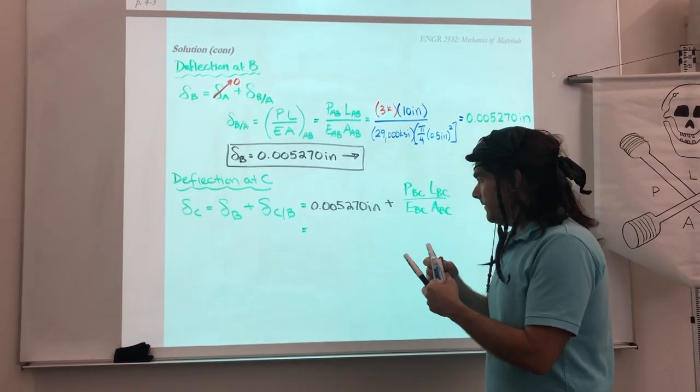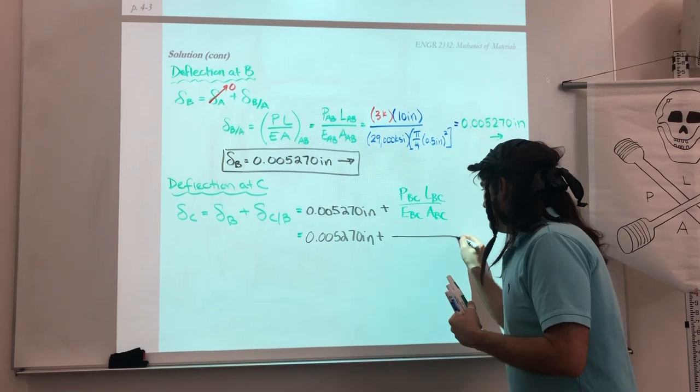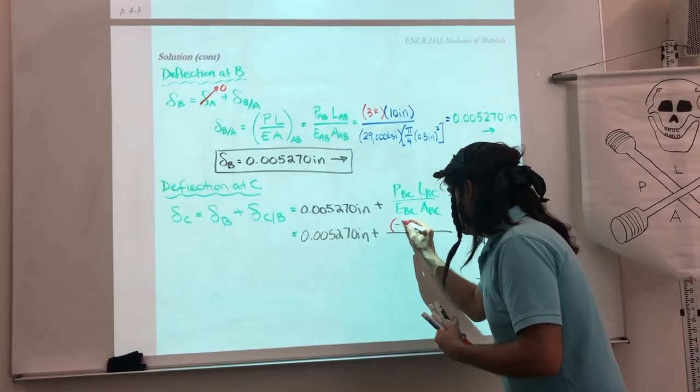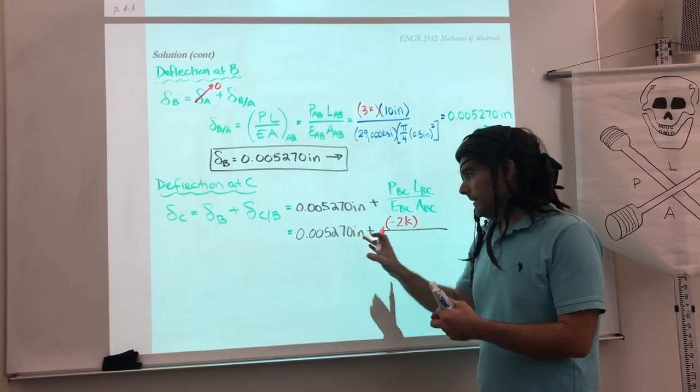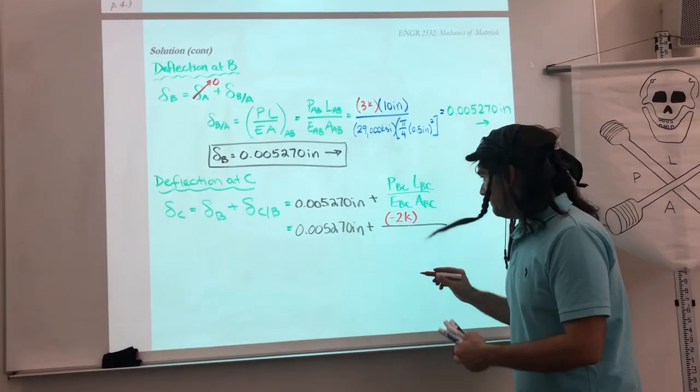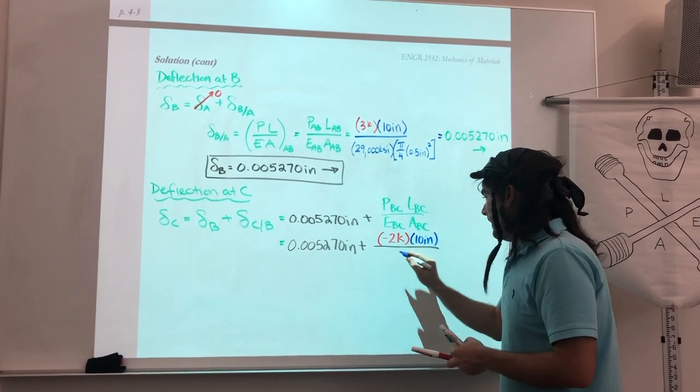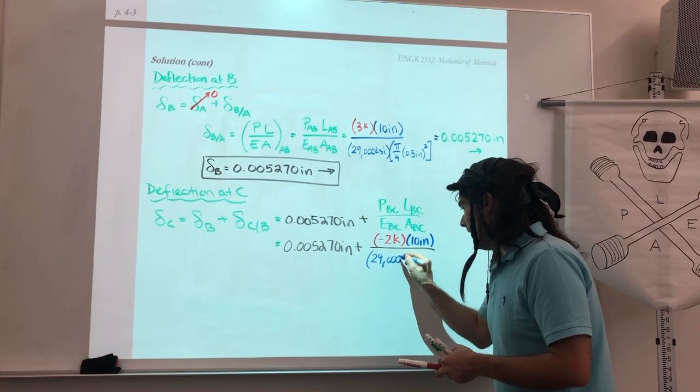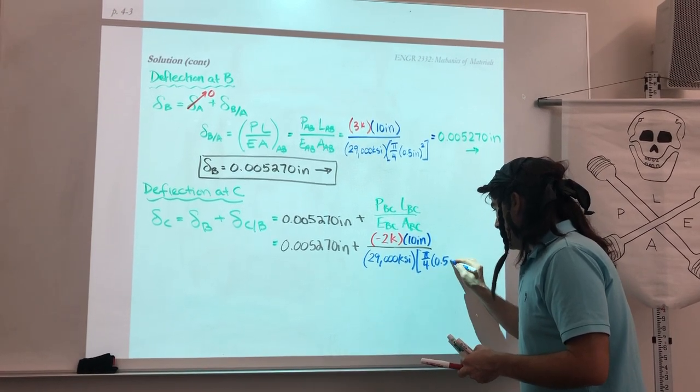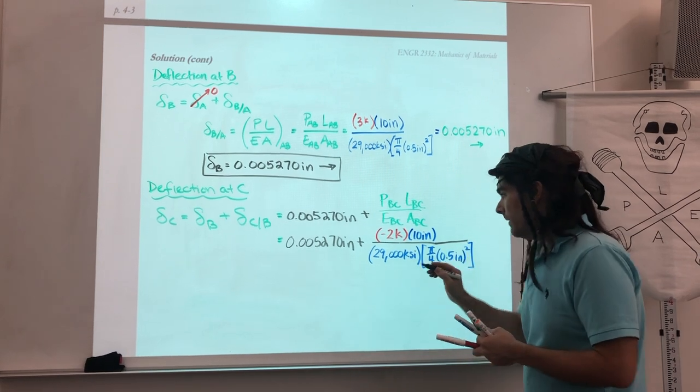So this gives us a value of, this remains the same, plus plug in our numbers here. Now, BC was in compression, so I'm going to put in a negative number. So that means it'll oppose this, because BC is actually getting shorter. So this value should be negative for contraction. The length of BC was the same, 10 inches. The modulus of elasticity was constant for the entire rod, and the area was also constant. Pi over 4 times 0.5 inches squared.